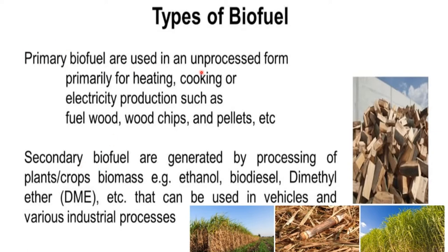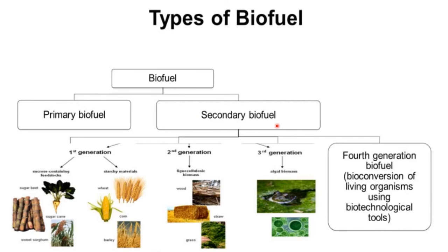Biofuels are further divided into primary biofuel and secondary biofuel. Primary biofuels are used in an unprocessed form, primarily for heating, cooking, or electricity production — such as fuel wood, wood chips, and pellets. Secondary biofuels are generated by processing of plant or crop biomass — examples are ethanol, biodiesel, and dimethyl ether (DME) — and can be used in vehicles and various industrial processes.